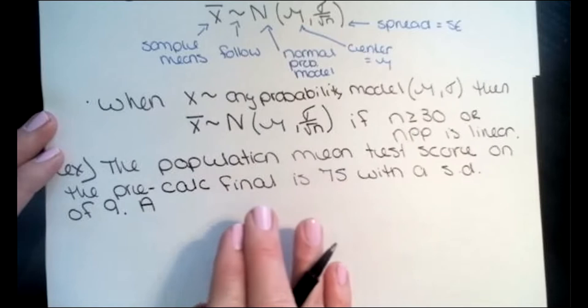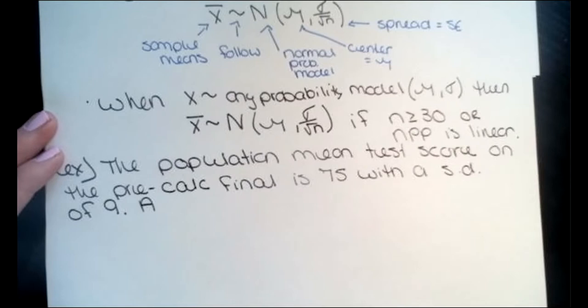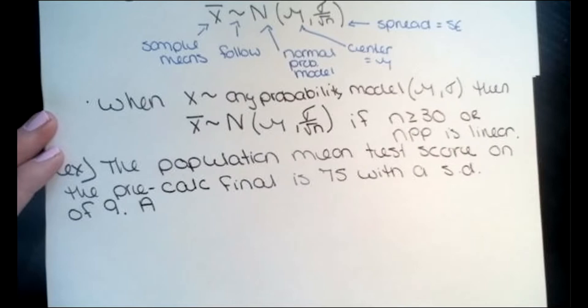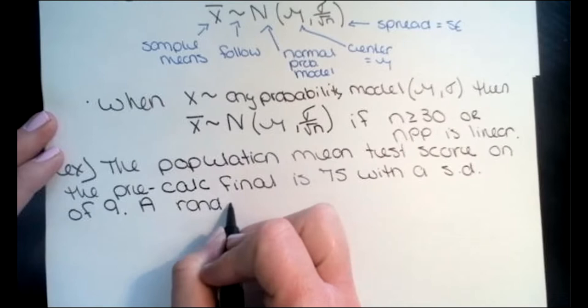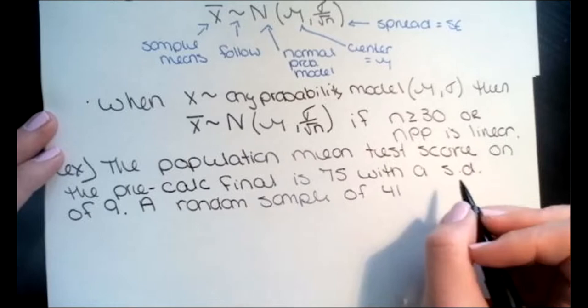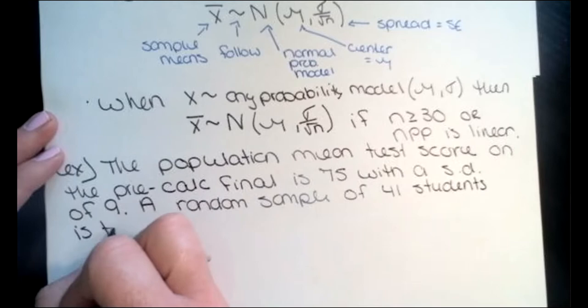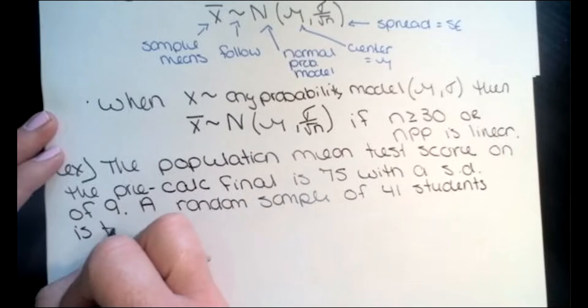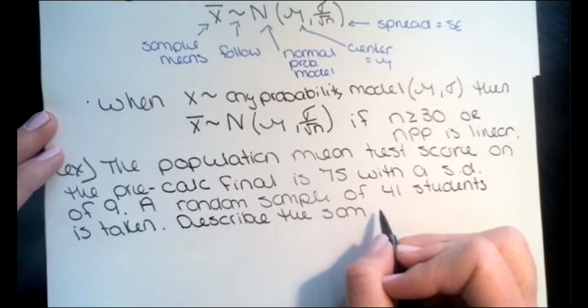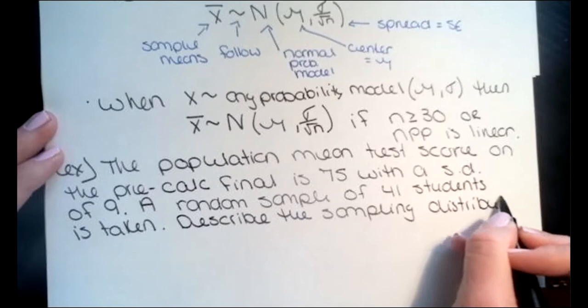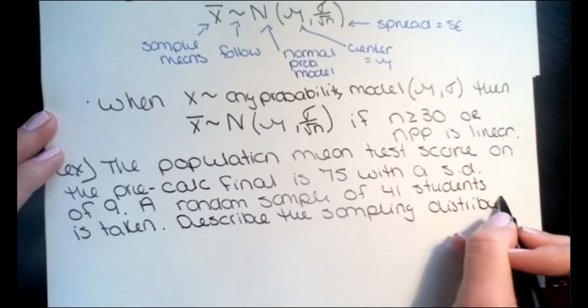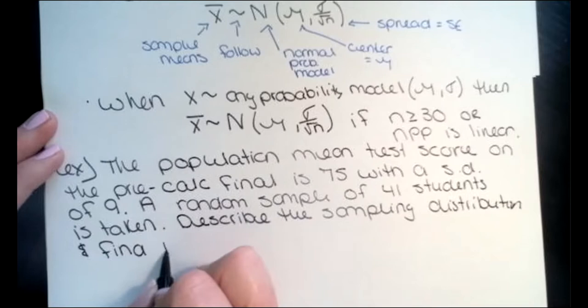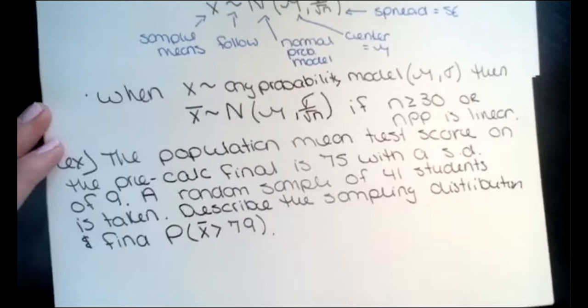This is what a problem is going to look like: I give you information about a population and we imagine what's going on with the sampling distribution, but you have to know your sample size. A random sample of 41 students is taken. Let's describe the sampling distribution and find the probability that x-bar is greater than 79 — that's pretty good considering the average is 75.